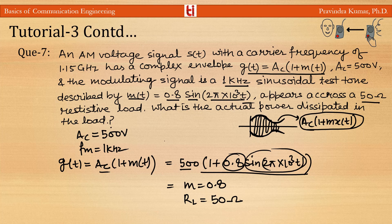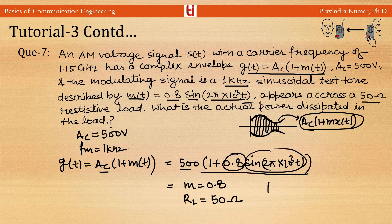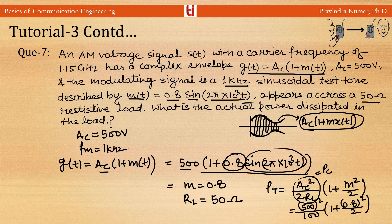The actual power dissipated in the load is Pt = (Ac²/2RL)·(1 + m²/2) = (500²/(2 × 50))·(1 + 0.64/2) = 2500 × 1.32 = 3300 watt = 3.3 kW.